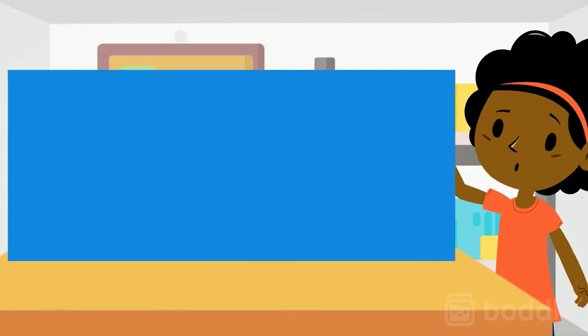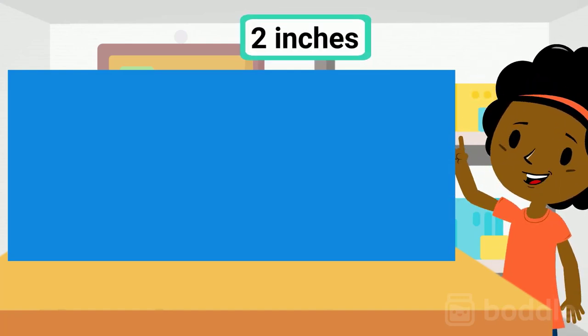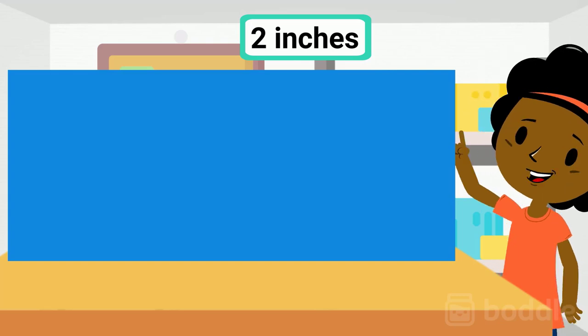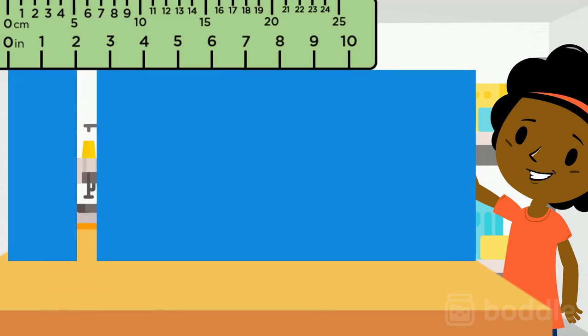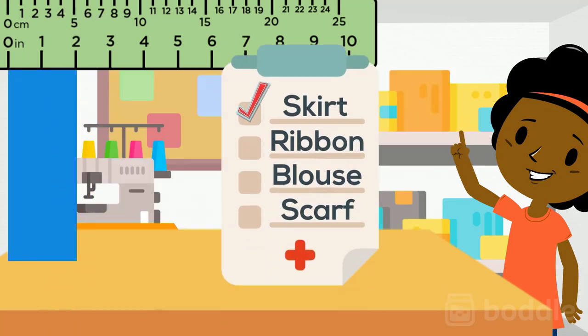Next, for the ribbons she liked to sew on the skirt, we need 2 inches of fabric. Let's use the ruler again to measure 2 inches and cut the fabric. Another check on our checklist.